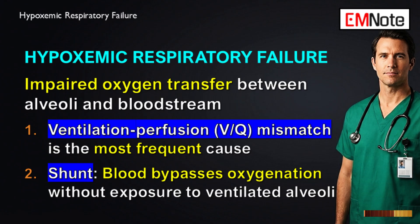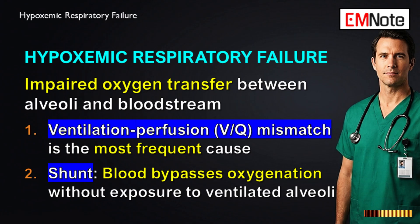What's actually happening when the VQ ratio gets thrown off? VQ mismatch means the ratio of air — ventilation — to blood flow — perfusion — is abnormal in the lung units. Think of pneumonia, where alveoli are filled with fluid but still getting blood flow. That's a low VQ ratio: the blood passes by but doesn't get fully oxygenated. The opposite is a pulmonary embolism blocking blood flow — you get plenty of air but no blood to pick it up. That's a high VQ ratio, wasted ventilation. Both scenarios tank your overall oxygenation.